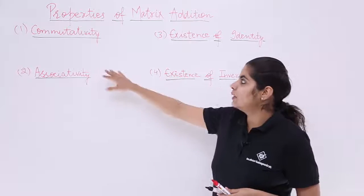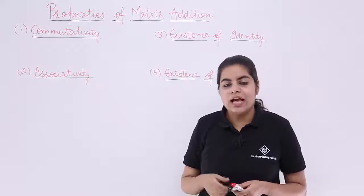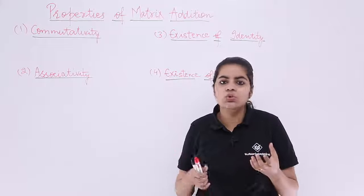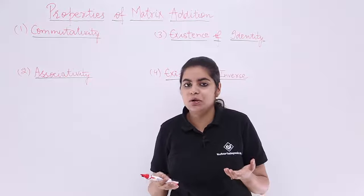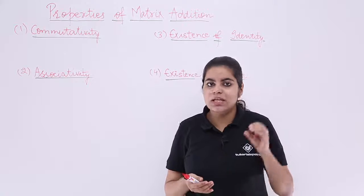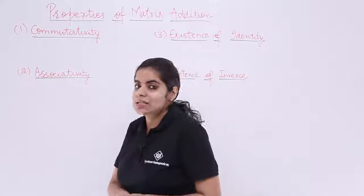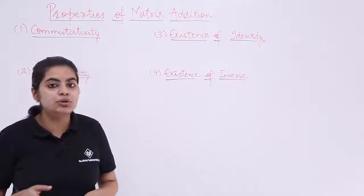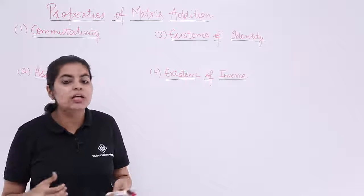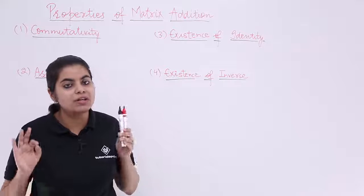The first property is commutativity. Commutativity means if there are two numbers, say two and three, what is two plus three? It is five. What about three plus two? That is also five. So commutativity is where the two operands involved are added and then you interchange their positions — still the answer does not change. That is commutativity.